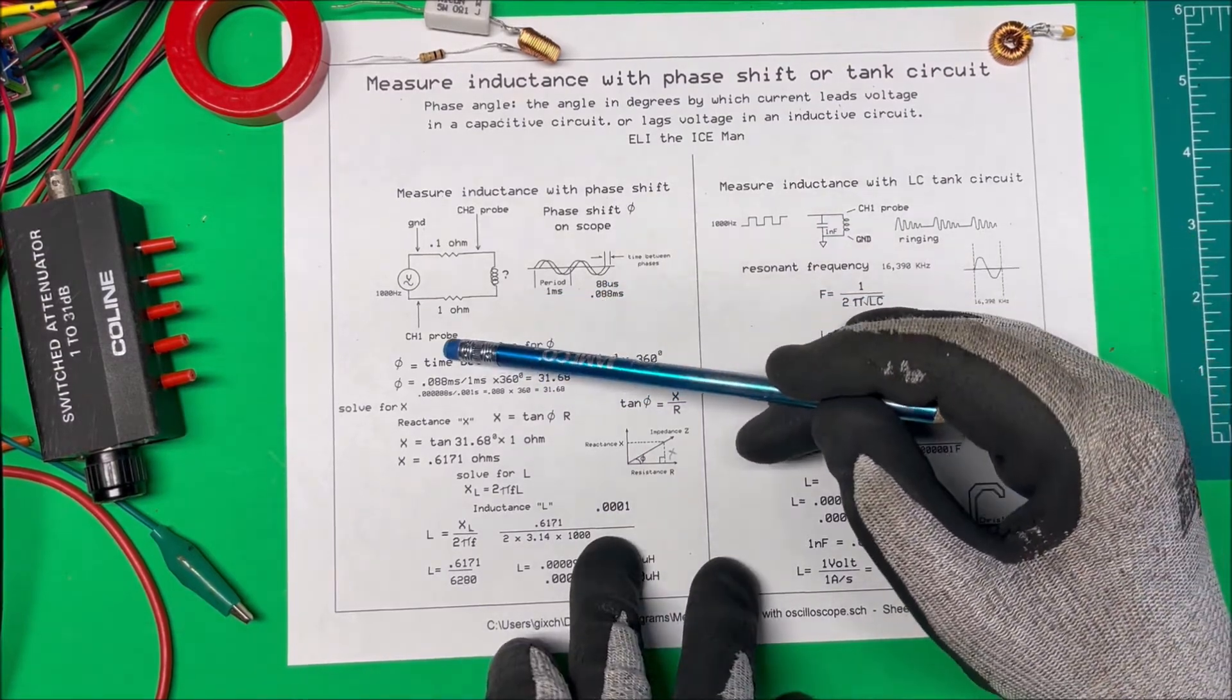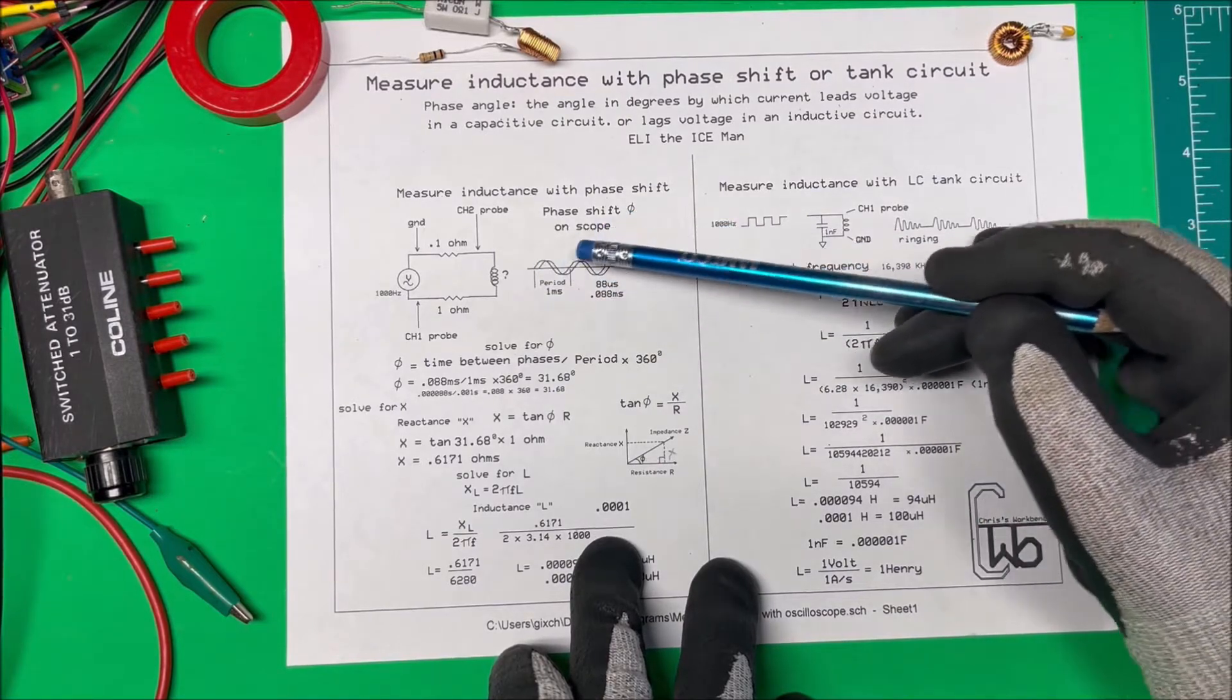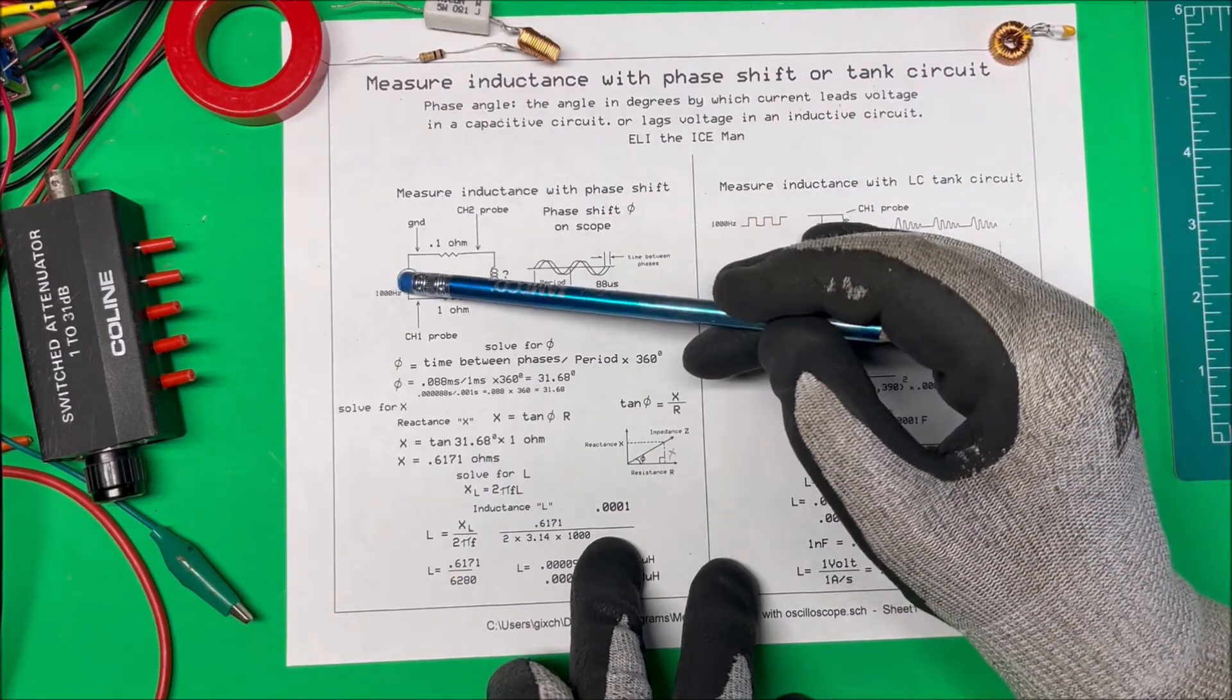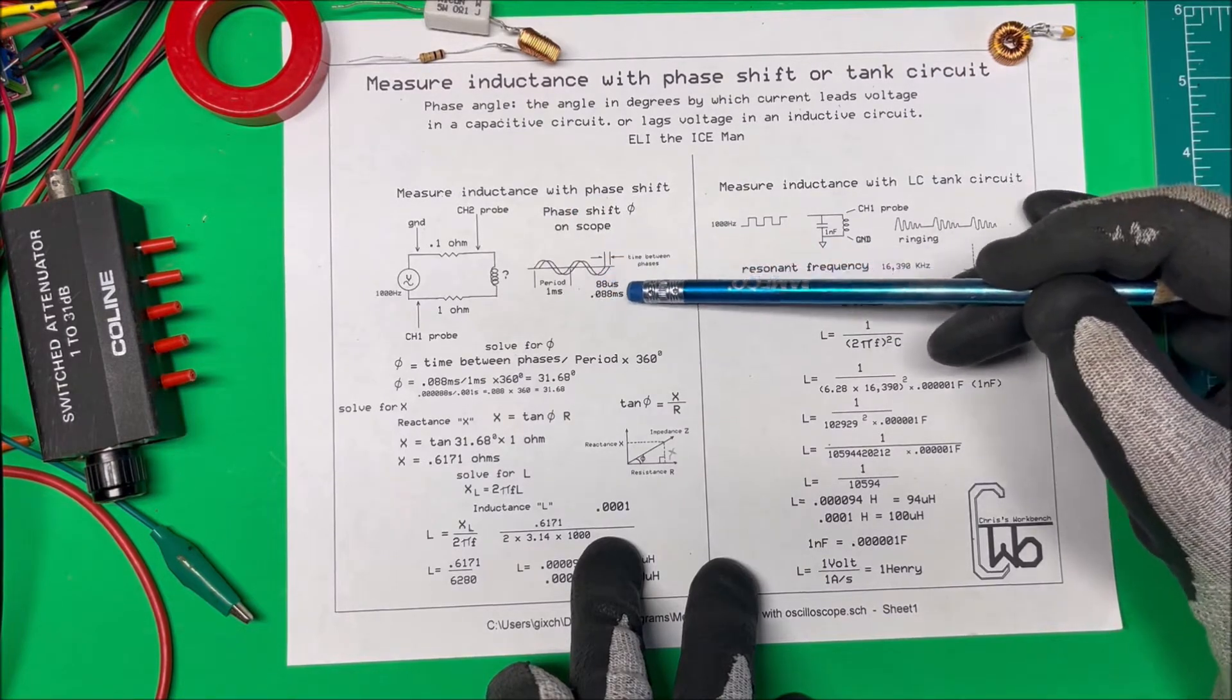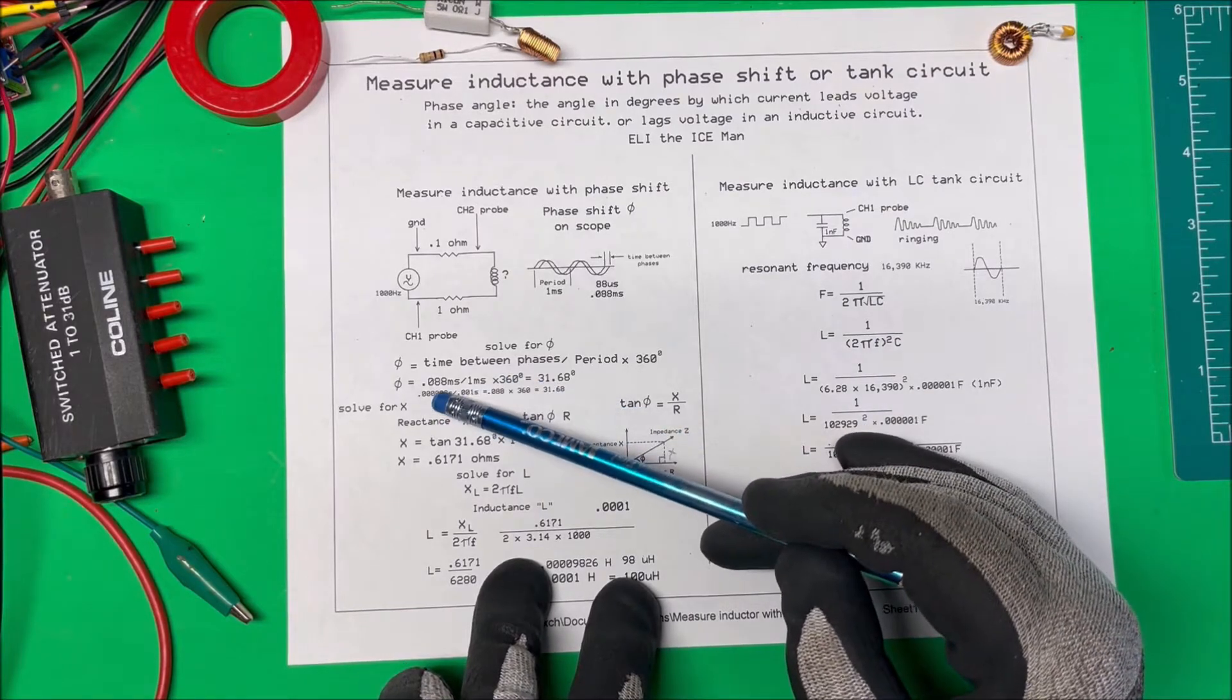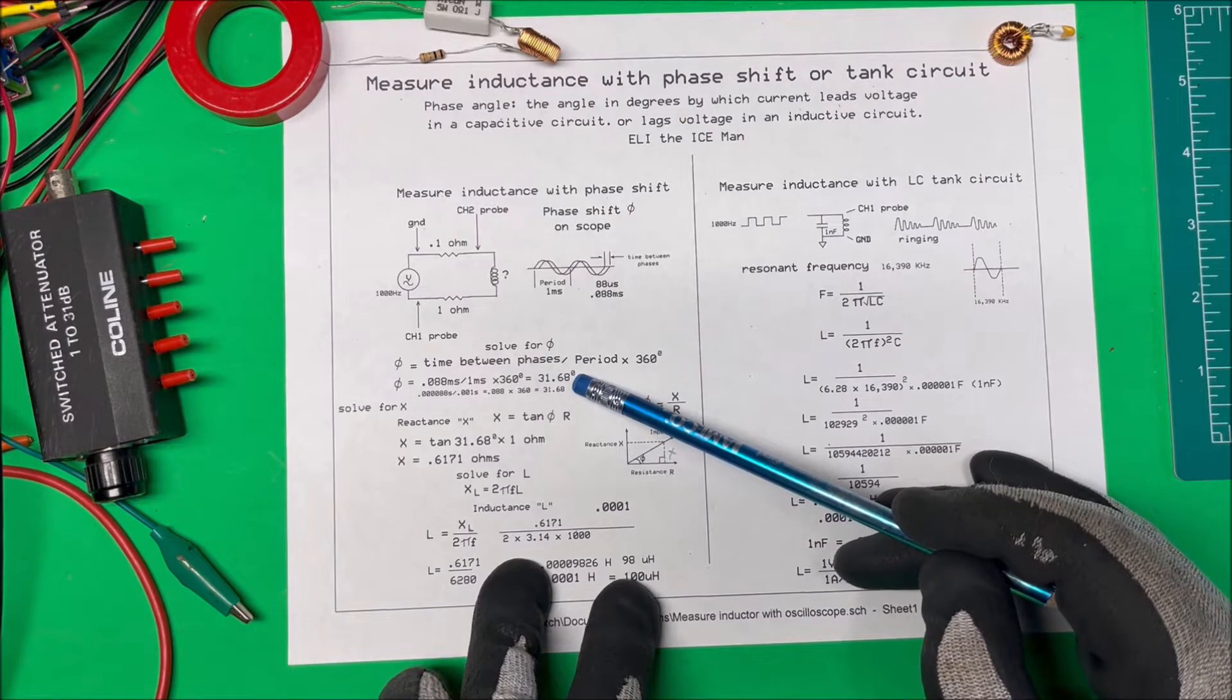To find the phase angle between them, it equals the time between the phases divided by the period times 360 degrees. The period is the time for one complete cycle, which is one millisecond because it goes a thousand times, so that's a thousand Hertz. On the scope I measured this distance with a couple cursors and it was 0.088 milliseconds. So 0.088 milliseconds divided by one millisecond times 360 degrees comes out to 31.68 degrees.